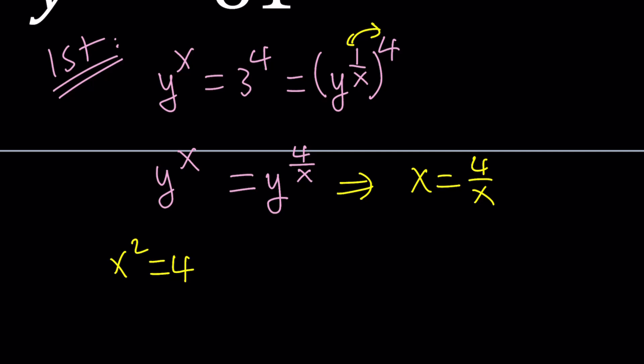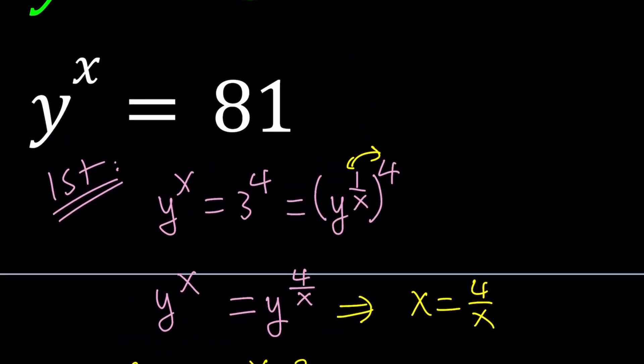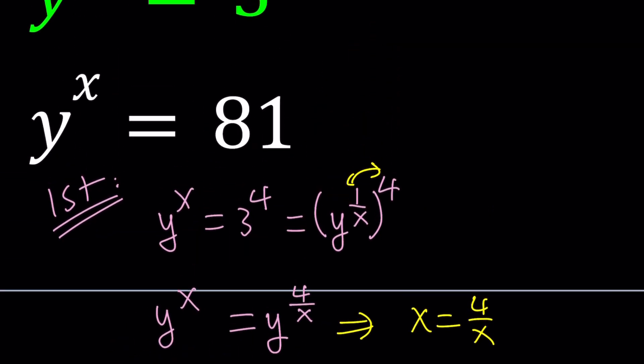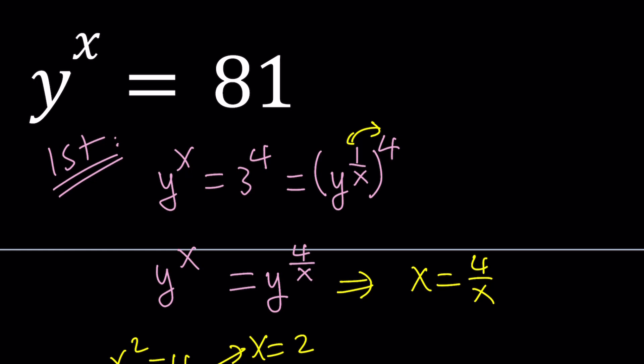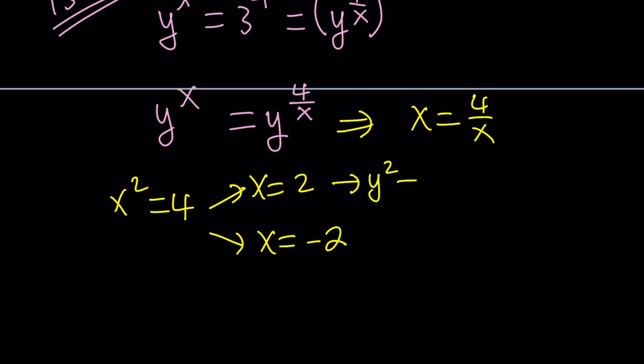Obviously, this gives us two solutions, but we have to be careful - are all the solutions going to satisfy the original system? We have to check. If x squared is equal to 4, then x equals 2 is one option and the other is x equals negative 2. If x is equal to 2, you can plug it in into either equation, but I'm going with the second one. If x is 2, then this means y squared is 81, right?